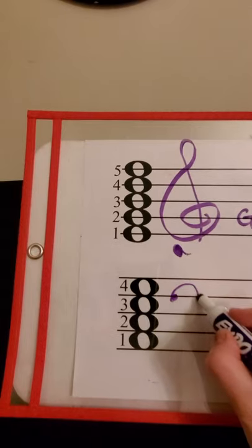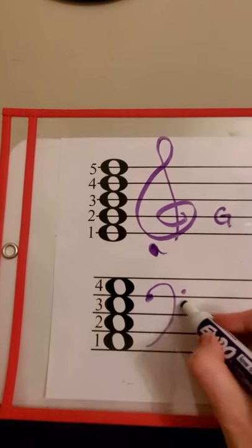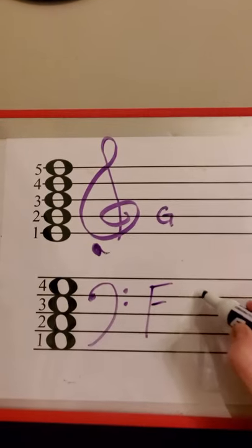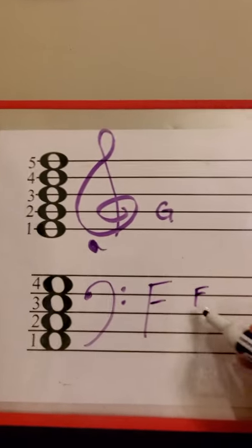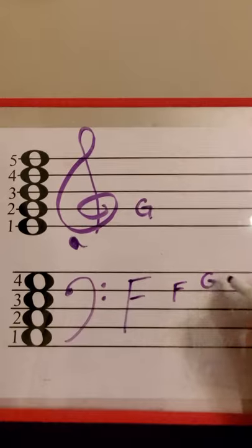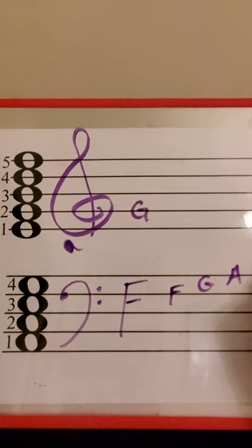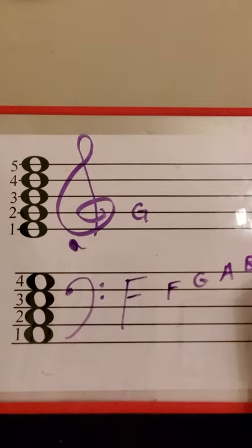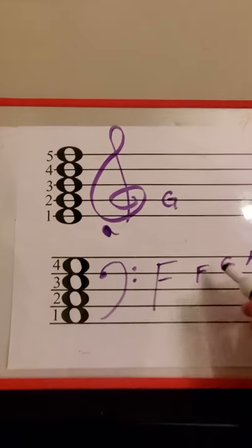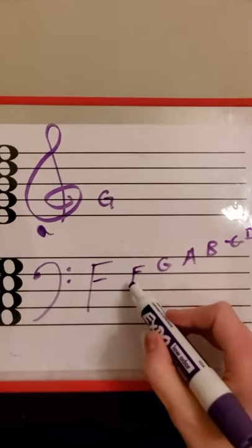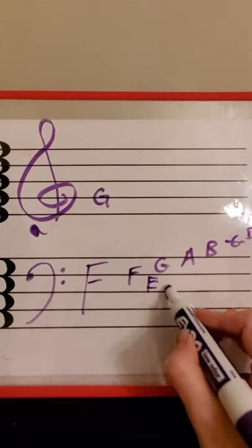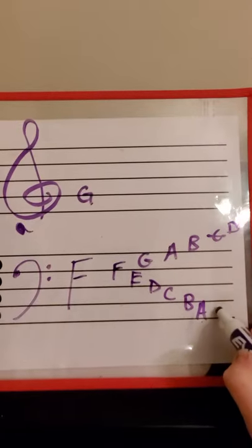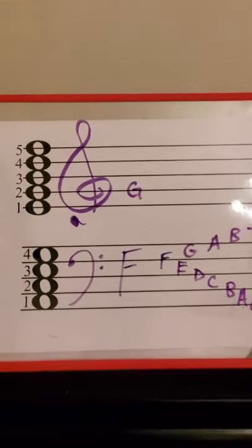So this clef, which is the bass clef, is a fancy letter F. And what it says is that this is an F, and after F in the alphabet comes G. And then we have A, and we have B, and we can extend that up to a C. And we can keep going D and so forth. Likewise, we can go down, which means backwards. So we have E, D, C, B, A, G. I can continue it down.